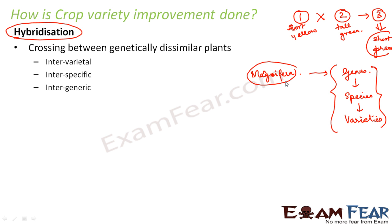Under Mangifera you can have different species; for example, one common variety is Mangifera indica, which is most commonly used. Each variety of mango in the market has a different scientific name. Similarly, in rice there are many varieties, all belonging to the same genus, but maybe belonging to different species or different varieties. Since they belong to different varieties, they have some different characteristics. Hybridization can be intervarietal — between two different varieties of the same species, such as Alphonso and Himsagar.